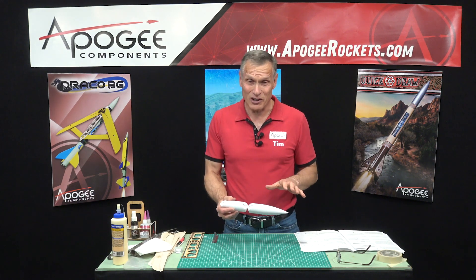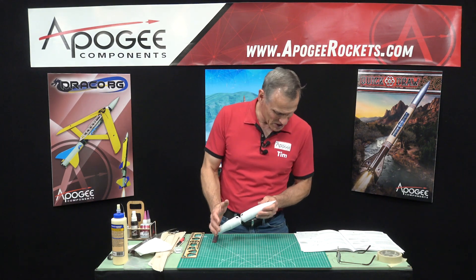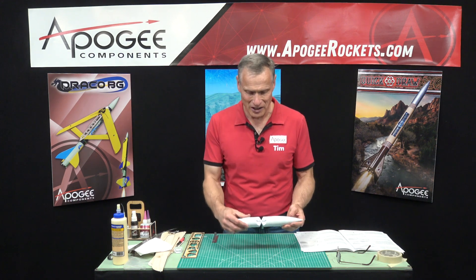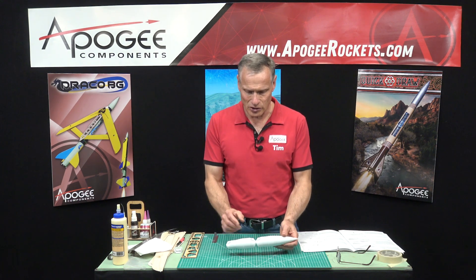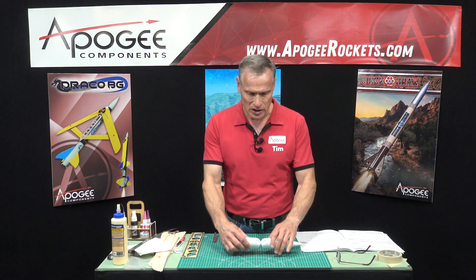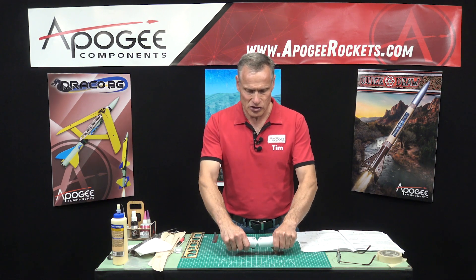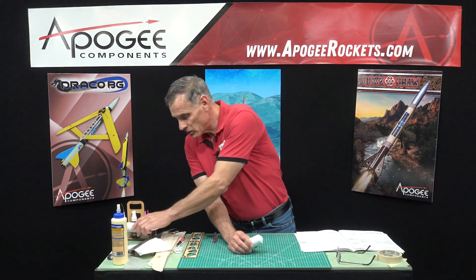We're in the construction of the Draco and we're on step 60, which is on page 15. We're going to take the nose cone and we need the bow tail section. To separate these you just snap them in half. It's pretty simple.